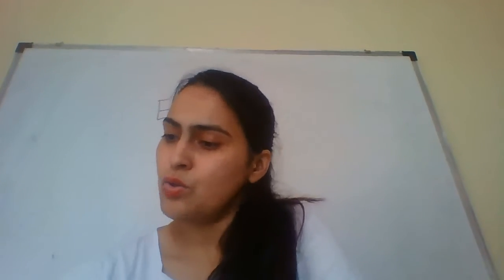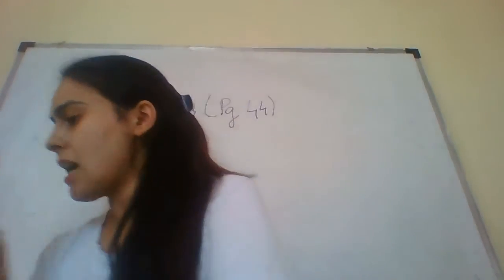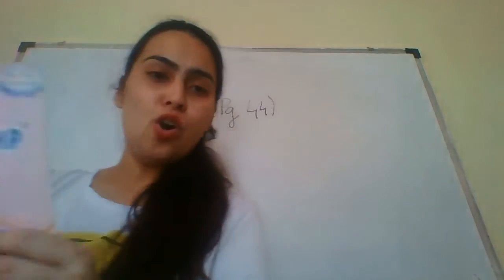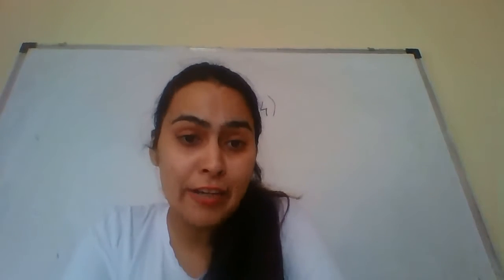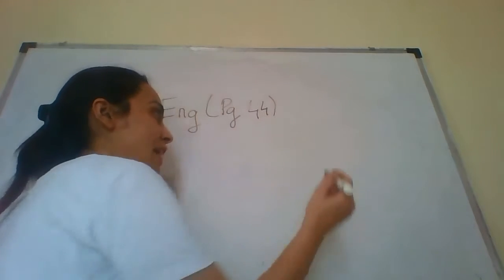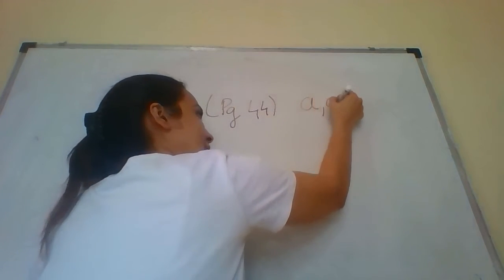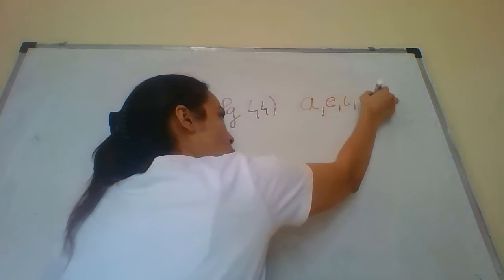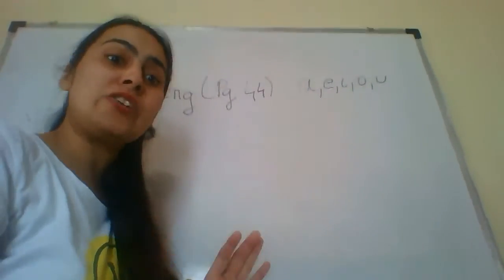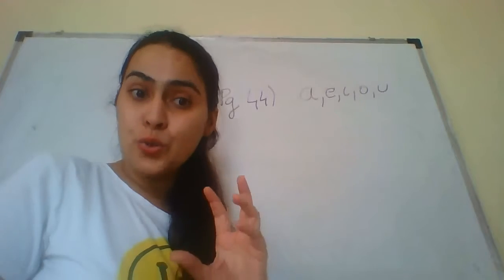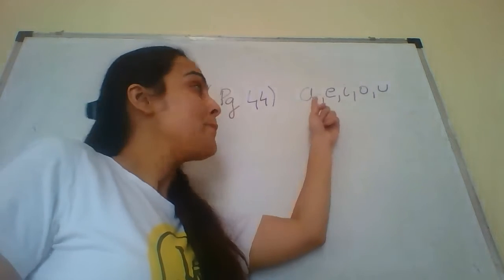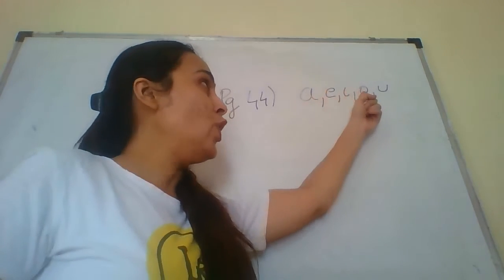Good afternoon students. Let's start a new topic in English — making words using the given vowels. We all know what a vowel is. There are five vowels in English: A, E, I, O, U. So today we are going to make words using vowels. The first vowel is A, then we have E, I, O, U.